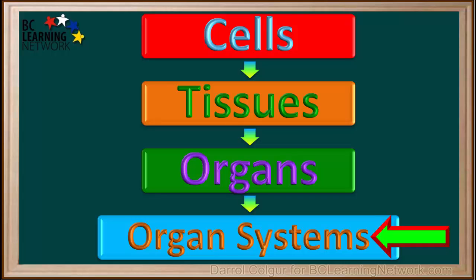Groups of organs working together form an organ system. Each organ system performs a general function for the body, such as digestion or respiration.